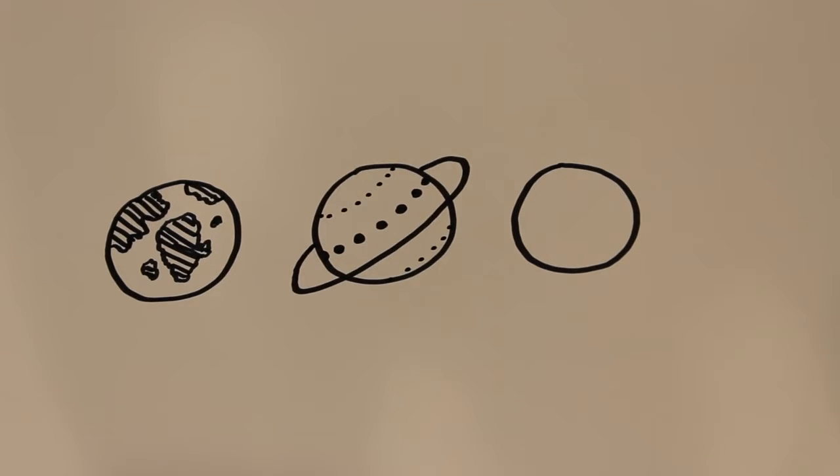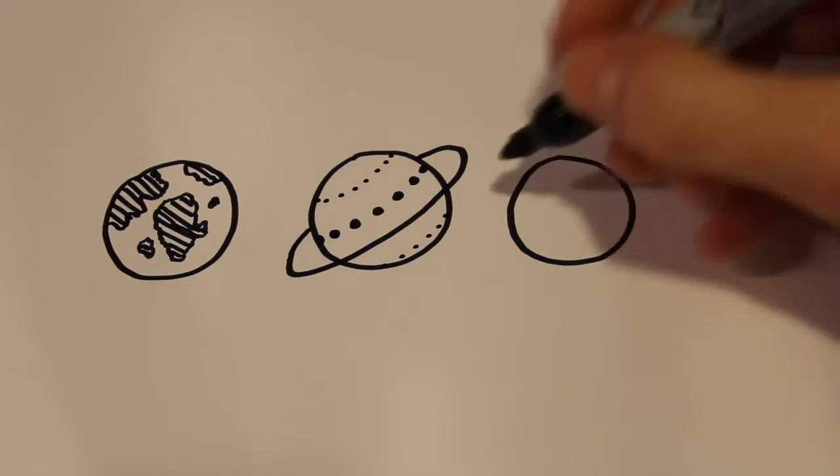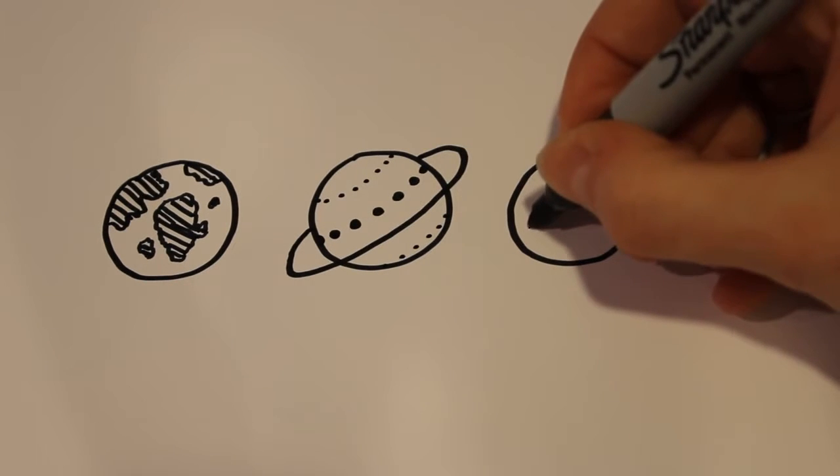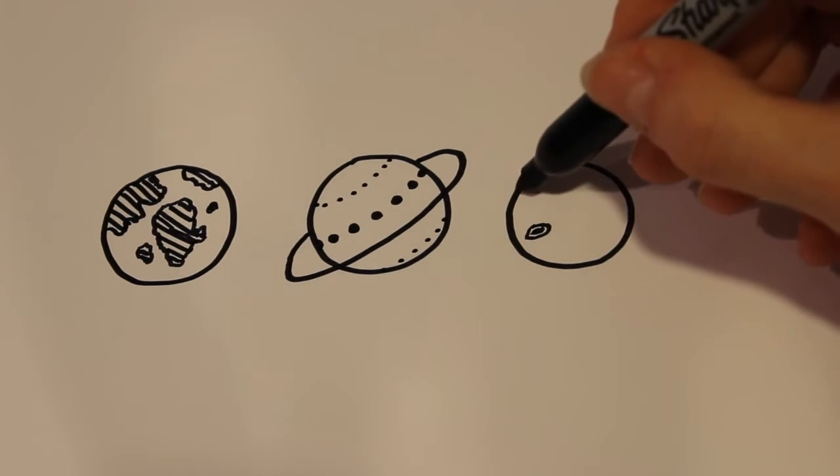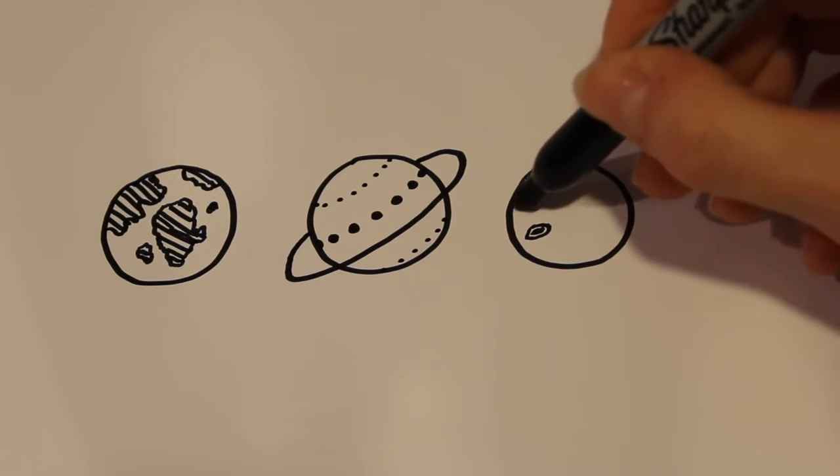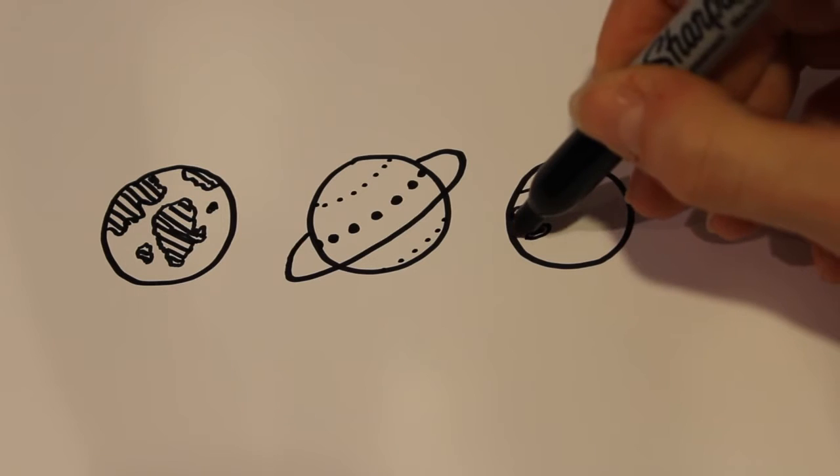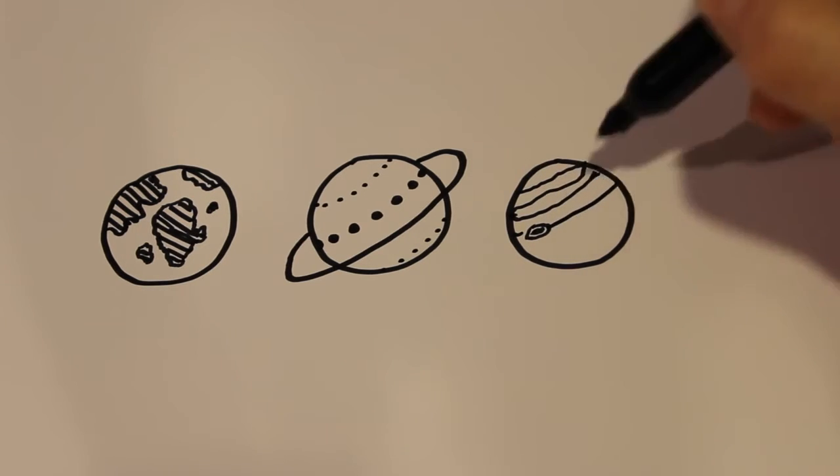And then the last one is Jupiter. So first I'm just going to start off with a weird circular shape, which Jupiter is known to have. And then for the lines, I'm just going to draw really zigzaggy, just whatever, back and forth, but making sure that it curves.